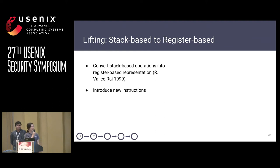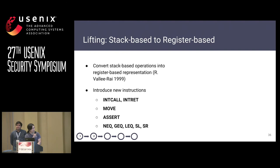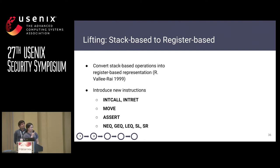Another problem with EVM bytecode is that the operations are relatively low level. So we introduced some new instructions that are slightly higher level, so that the output is more concise. These include, for example, int_call and int_ret, which call and return from internal functions, and move, which moves a constant value or register value to another register. Assert is just like in high-level languages. We also add not-equal, greater-than-or-equal, less-than-or-equal, shift-left, and shift-right — operations commonly used in contracts but not directly available at the bytecode level.